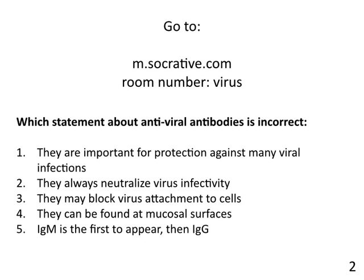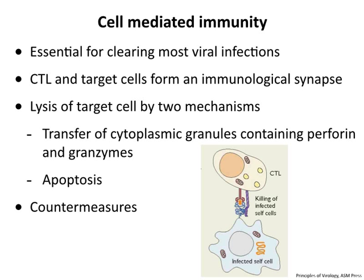The next question: which statement about antiviral antibodies is incorrect? The answer is number two—they don't always neutralize virus infectivity. Not all antibodies that we make are neutralizing. Everything else is correct: they are important for protection, they may block attachment, they can be found at mucosal surfaces, and IgM is the first to appear.